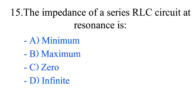Question number 15. The impedance of a series RLC circuit at resonance is: option A, minimum; option B, maximum; option C, zero; option D, infinite. The correct answer is option A, minimum.